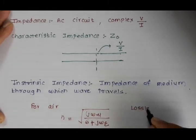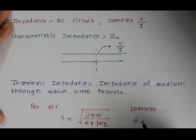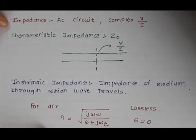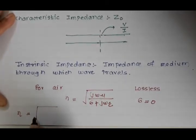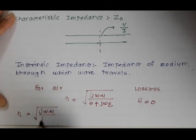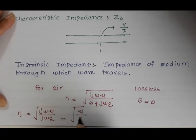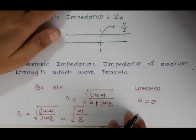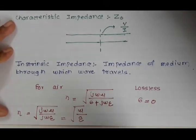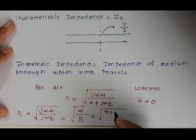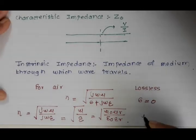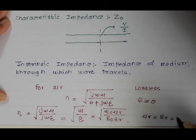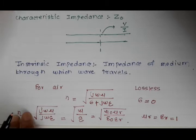We are assuming here our medium is a lossless medium. For the lossless medium, sigma will be zero, and if you calculate further, eta becomes equal to j·omega·mu divided by j·omega·epsilon, which is nothing but the square root of mu by epsilon. If we put the values mu = mu0·mu_r and epsilon = epsilon0·epsilon_r, and for air mu_r = epsilon_r = 1.